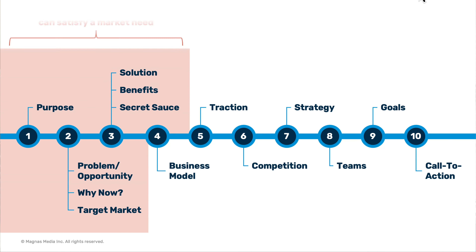Part one helps you explain the need for your ideas or solutions. You'll help your audience understand what problem you can solve for them and how you propose to solve it. Your objective here is to help your audience self-identify if what you have is relevant to their needs.